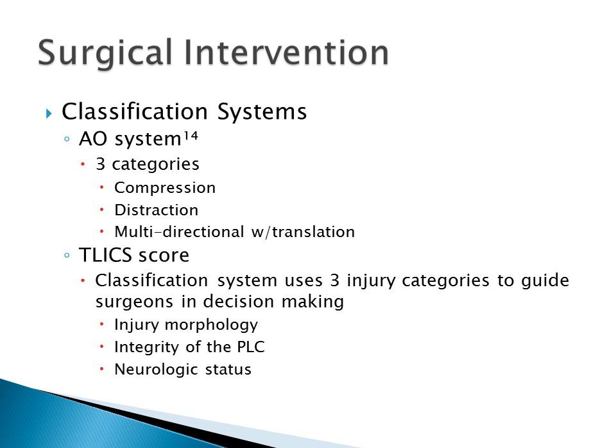There are a few classification systems used to help guide clinical decision-making. One that has been used extensively is the AO system, which is based on three categories: compression, distraction, and multi-directional with translation. There is also a newer one, the Thoracolumbar Injury Classification System (TLICS), which is similar to the AO system yet brings in neurological status as one of the guidelines.